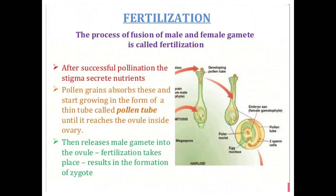Now, what happens after the pollen grains reach the stigma and how are fruits formed from a flower? After successful pollination, the stigma secretes nutrients — a sugary substance. Pollen grains absorb these and start growing in the form of a thin tube called the pollen tube, until it reaches the ovule inside the ovary. Then it releases the male gamete into the ovule, fertilization takes place, and results in the formation of a zygote.